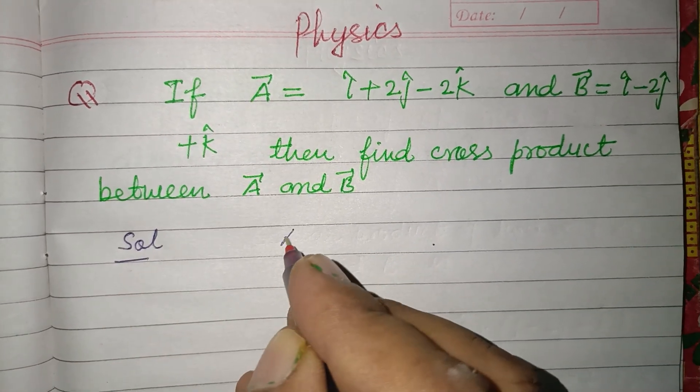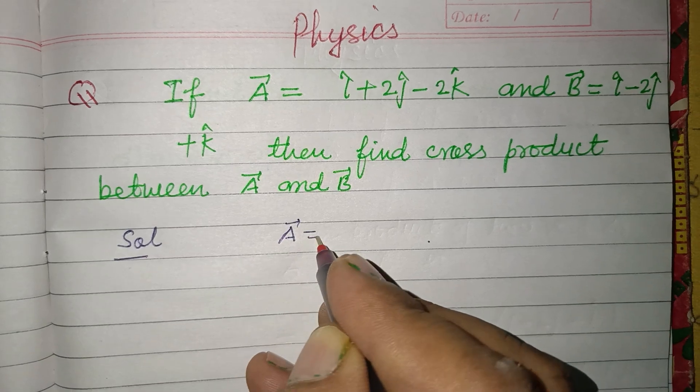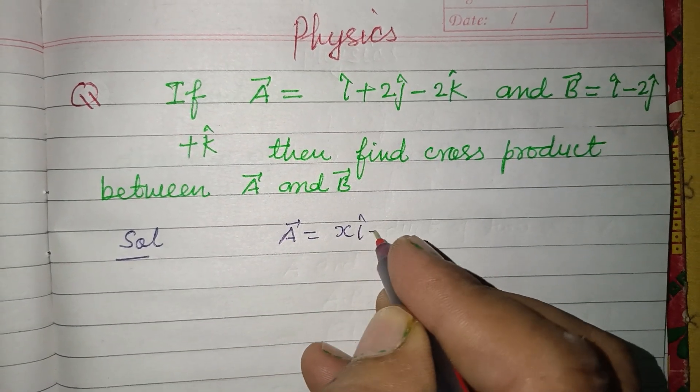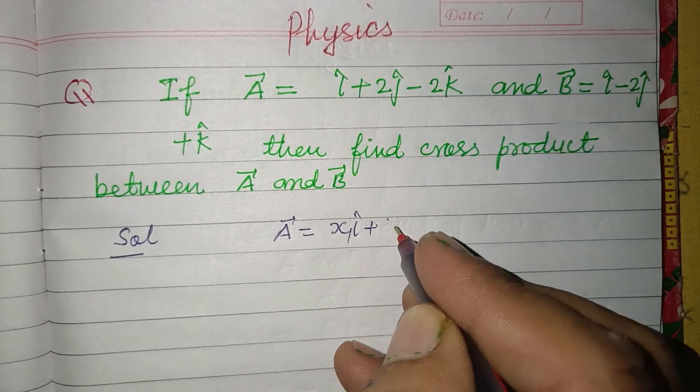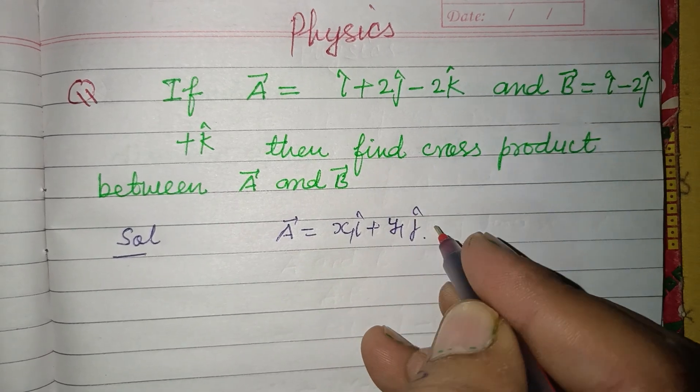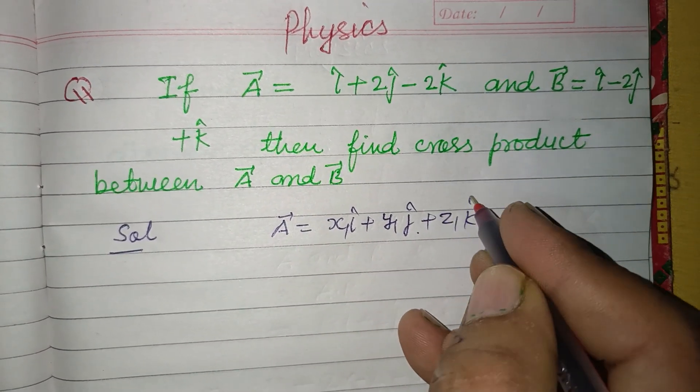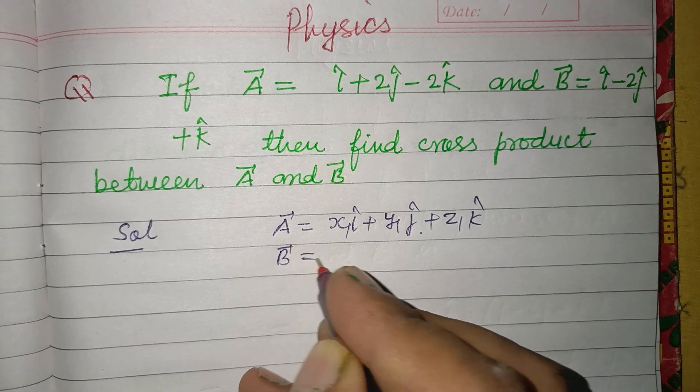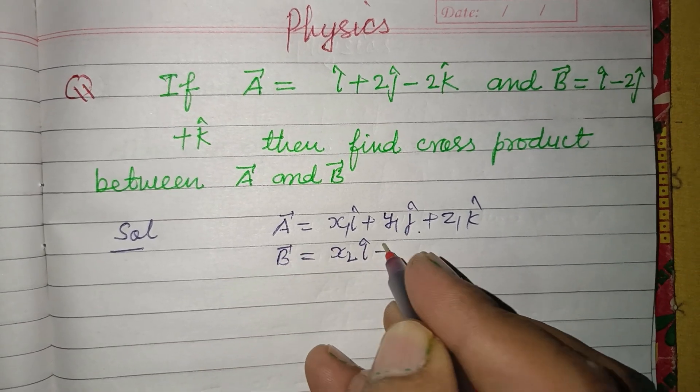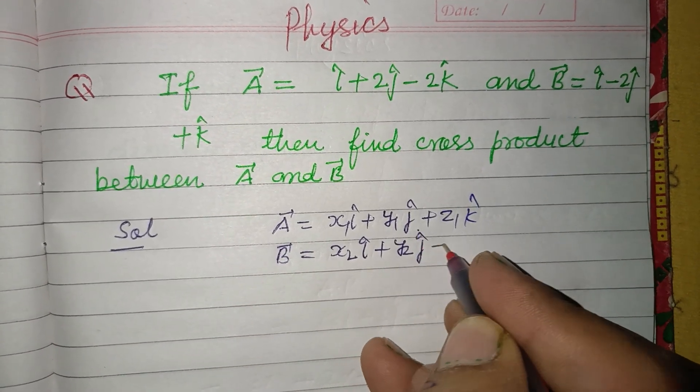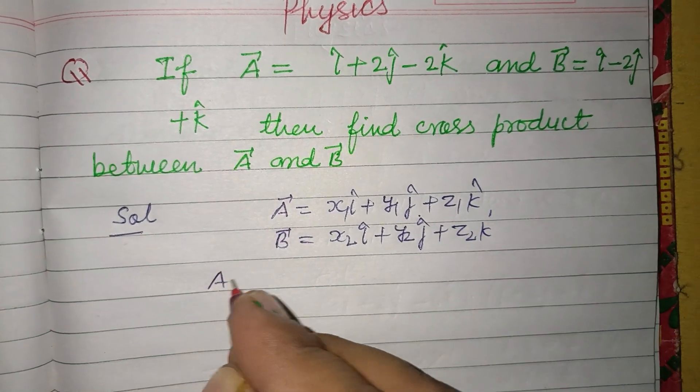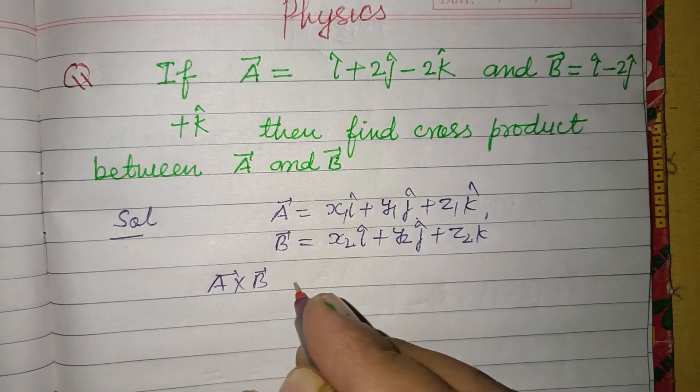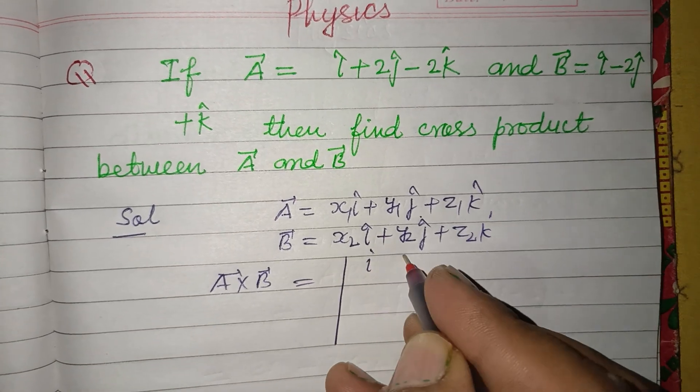So students, if A is x1 i cap plus y1 j cap plus z1 k cap, and B is x2 i cap plus y2 j cap plus z2 k cap, then the cross product of these vectors...